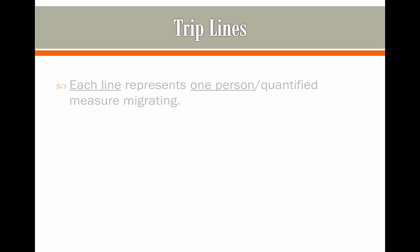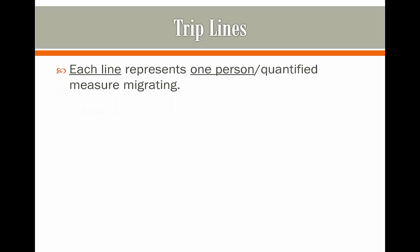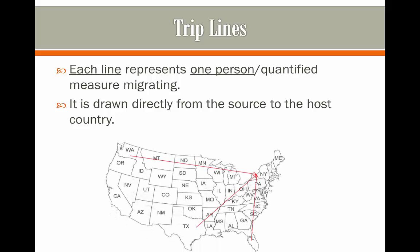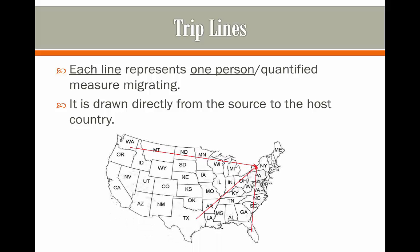The final type of immigration movement maps are trip lines. This is where each line represents one person or a quantified measure migrating. It's drawn directly from the source country to the host country, and of course we're not going to have proportional dimensions in the line because it's only one person at a time. For example, here we have three people migrating from Orlando, from Texas, and from Washington to New York at the same time.